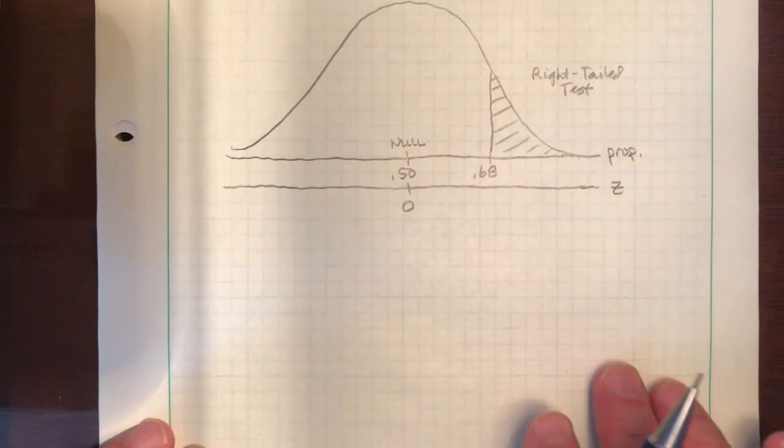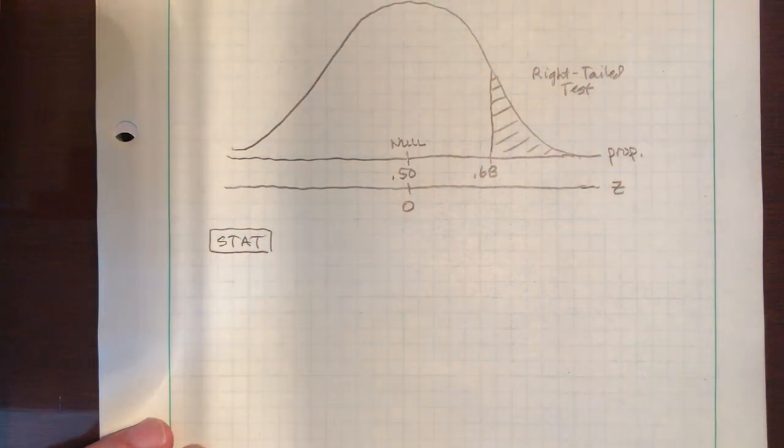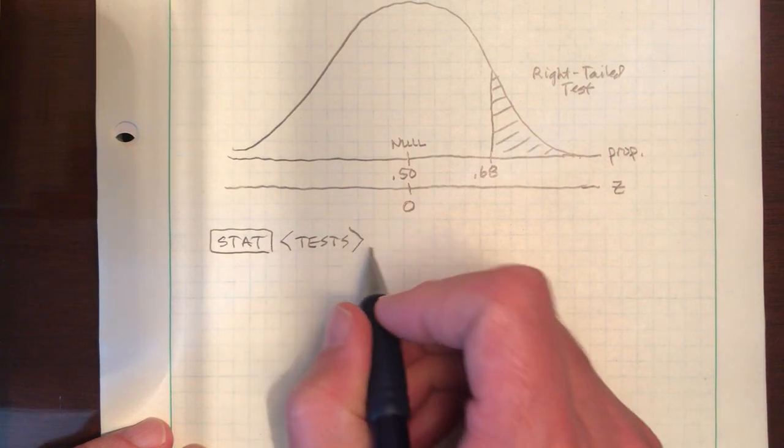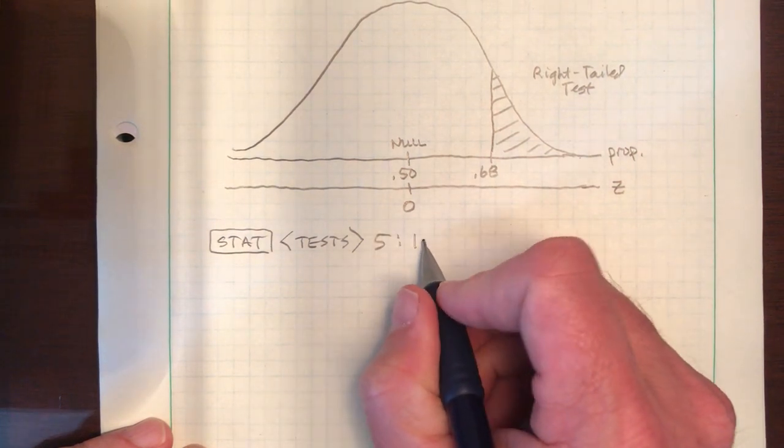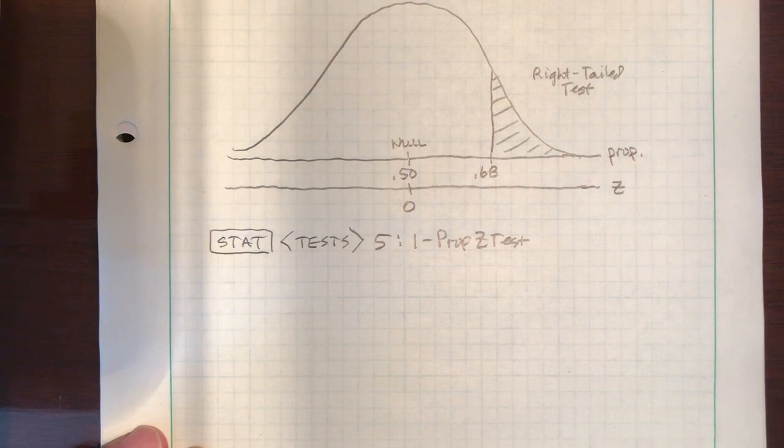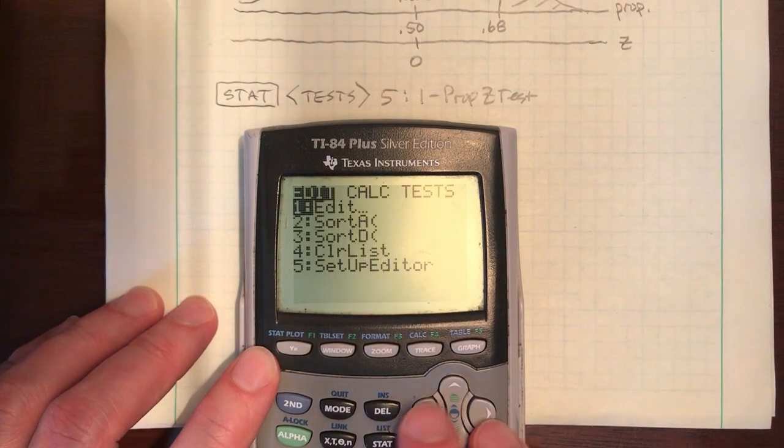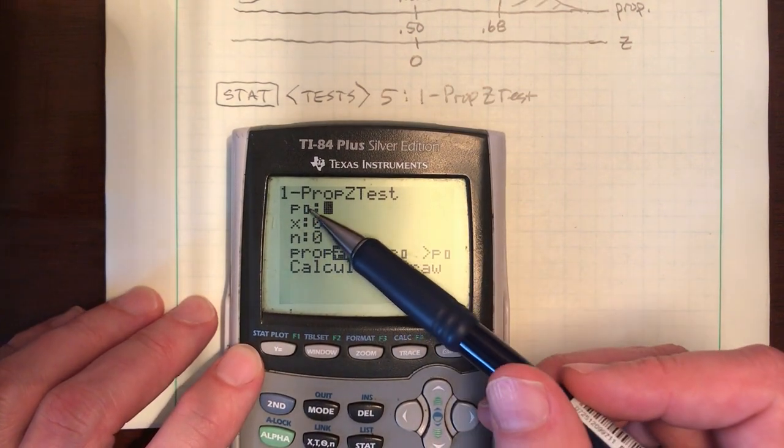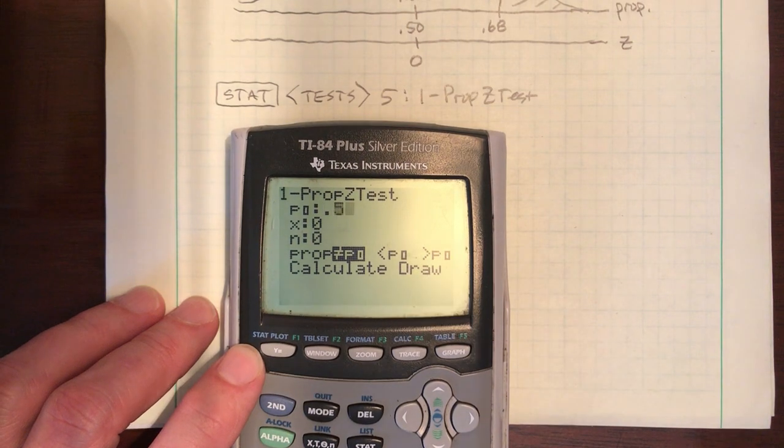No formulas. I'm going to tell you like confidence intervals, start by hitting your stat button, and then scroll over to the tests menu. And for hypothesis test the one we're going to choose is number five, and that stands for a one proportion Z test. So for this problem, stat over to test number five.